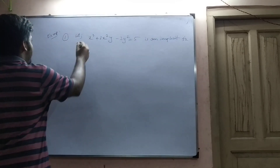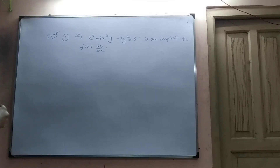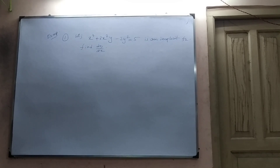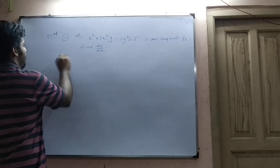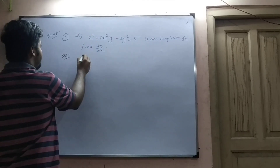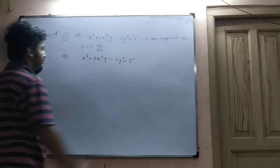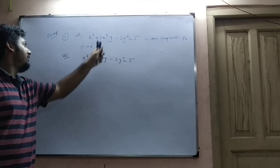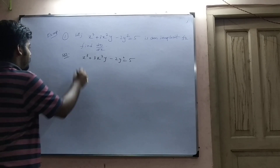Let x cubed plus 3x squared y minus 2y cubed equal to 5. This is an implicit function. Why is it an implicit function? Because I can't represent x in terms of y. Find dy/dx — that means differentiate with respect to x.